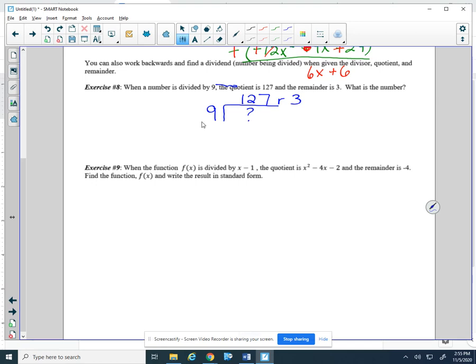The opposite of division is multiplication. So in order to find that number that will go inside this division sign, I can do 127 times nine first. So if I multiply those two out...